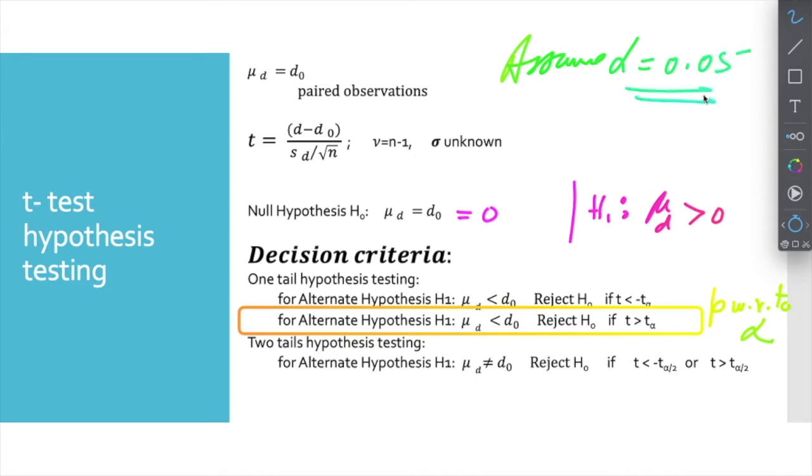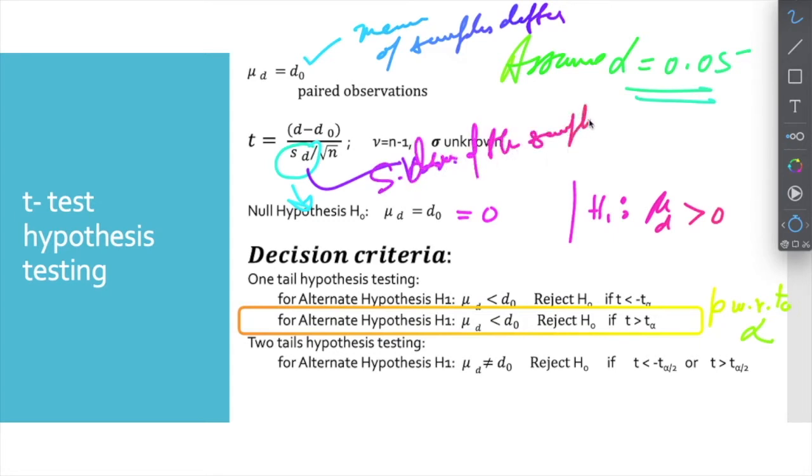The pairwise t-test is very simple and we can only apply when the sample size is same. The formula is t equals d-bar minus d-naught divided by s_d over square root n. D-naught is the mean of samples difference, and s_d is the standard deviation of the samples difference.